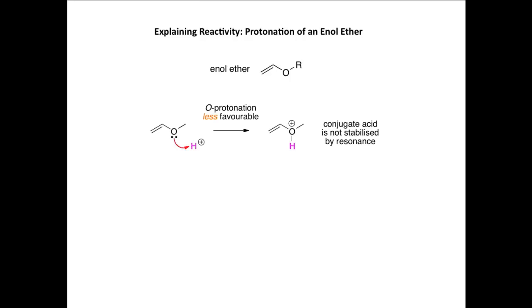We're now going to use resonance to explain reactivity. In this example, we'll look at protonation of an enol ether — a functional group where an oxygen substituent is connected directly to a C=C double bond. Perhaps surprisingly, protonation on the oxygen atom of the enol ether is less favorable than protonation on carbon. For O-protonation, we form a new O–H bond and place a positive charge on the oxygen, giving the conjugate acid. However, this conjugate acid cannot be stabilized by resonance.